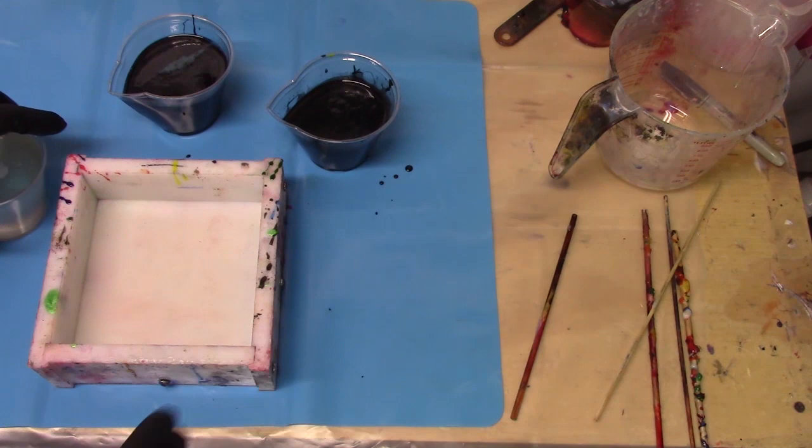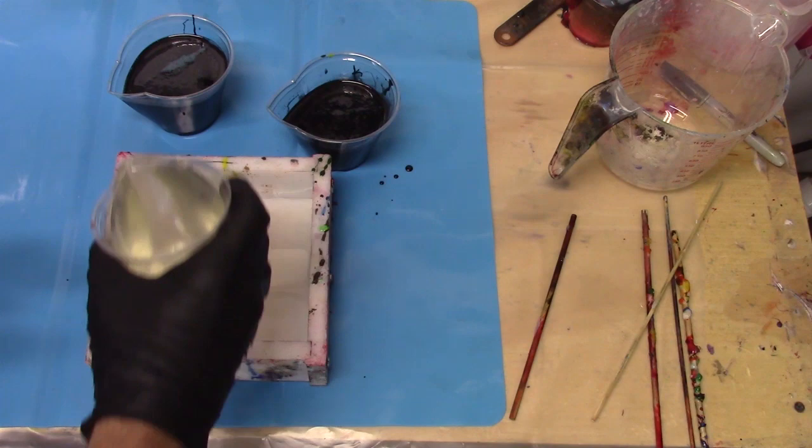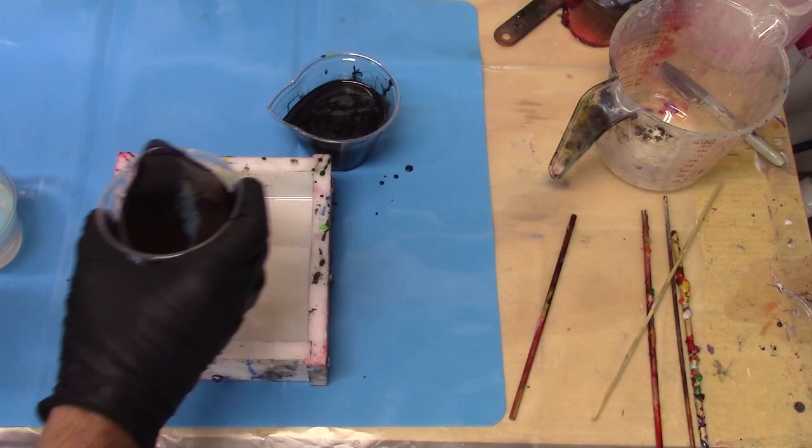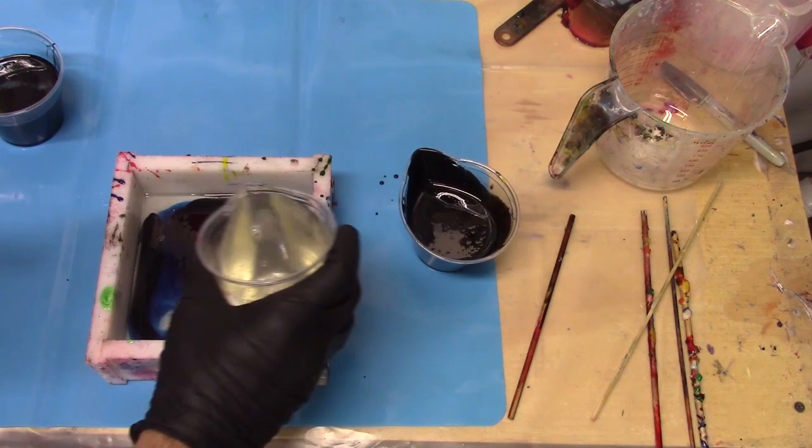What we're going to do is alternate the colors. We're going to start with white first because that's what I have the most of, and this stuff is going to jump pretty quick. We're at 100 degrees now. As I pour this, the first couple layers there's not a lot of difference.